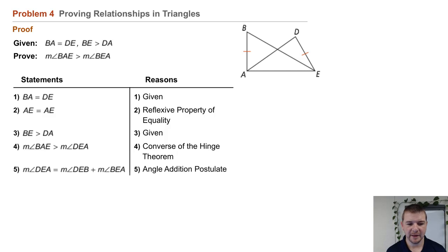Statement 5: the measure of angle DEA equals the measure of angle DEB plus the measure of angle BEA by the angle addition postulate.